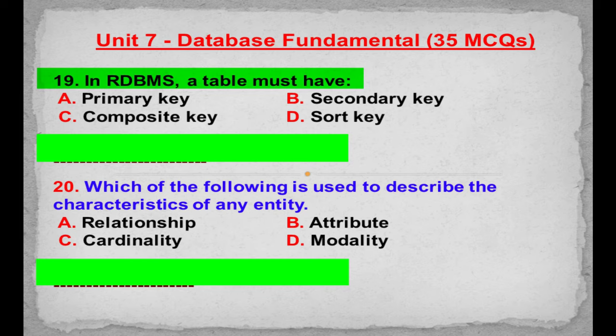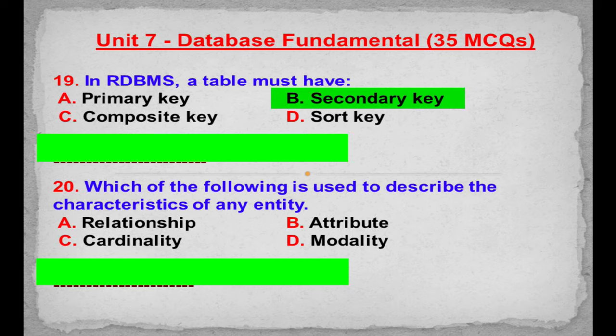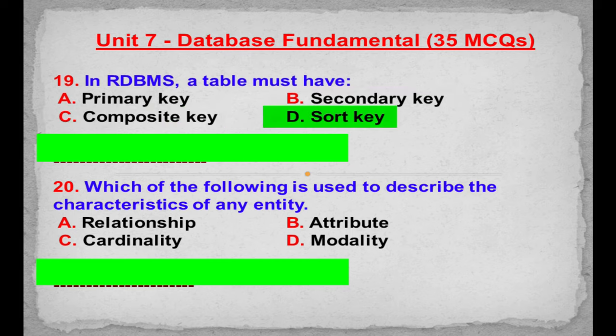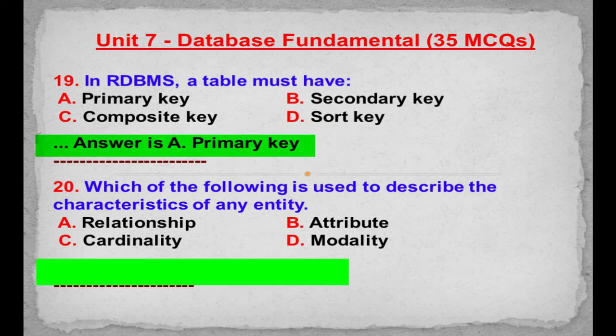MCQ number 19: In RDBMS, a table must have. Option A: Primary key. Option B: Secondary key. Option C: Composite key. Option D: Sort key. Correct answer is Option A: Primary key.